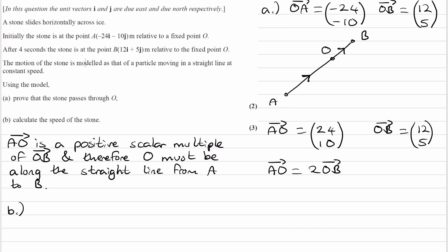To work out the speed, we need to use distance over time. Let's work out the vector AB. AB is going to be AO plus OB. That would be (24, 10) plus (12, 5),